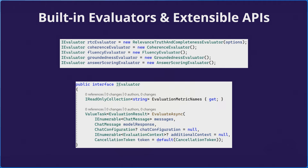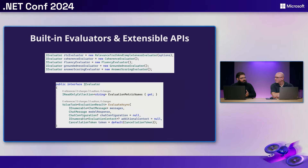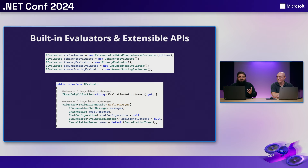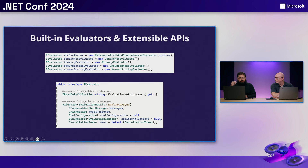If you'd like to extend beyond the out-of-the-box evaluators, there are extensible APIs and interfaces providing building blocks to implement your own. For example, if you're building an application that writes jokes, you might want a 'funniness' evaluator. You could build an evaluator that determines how funny a response is. These also build on top of Microsoft.Extensions.AI foundations, so you're building on a solid foundation.